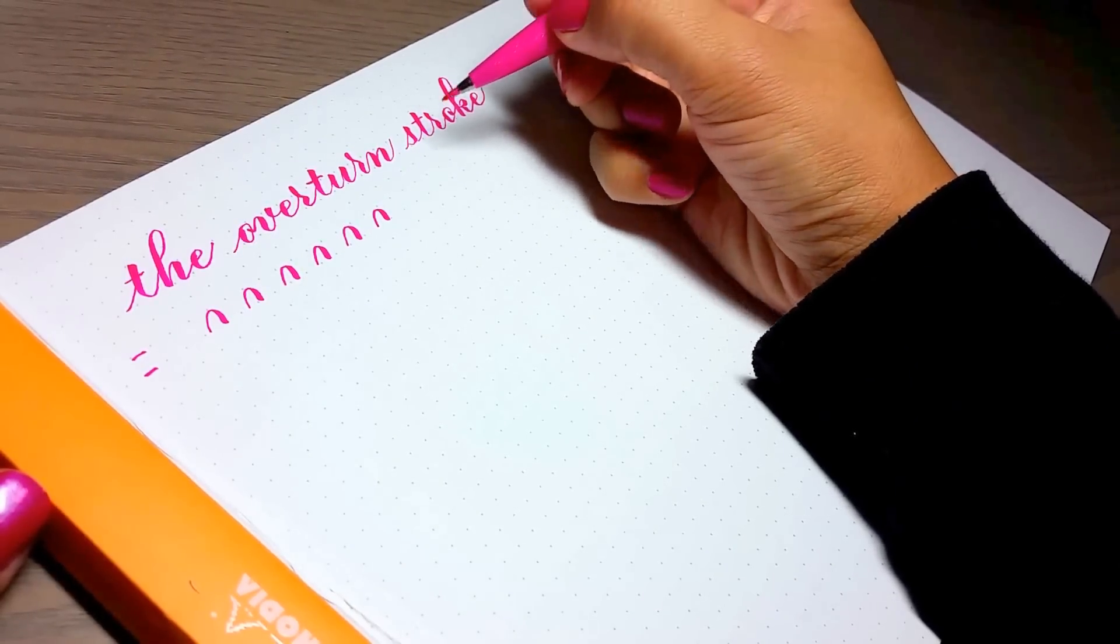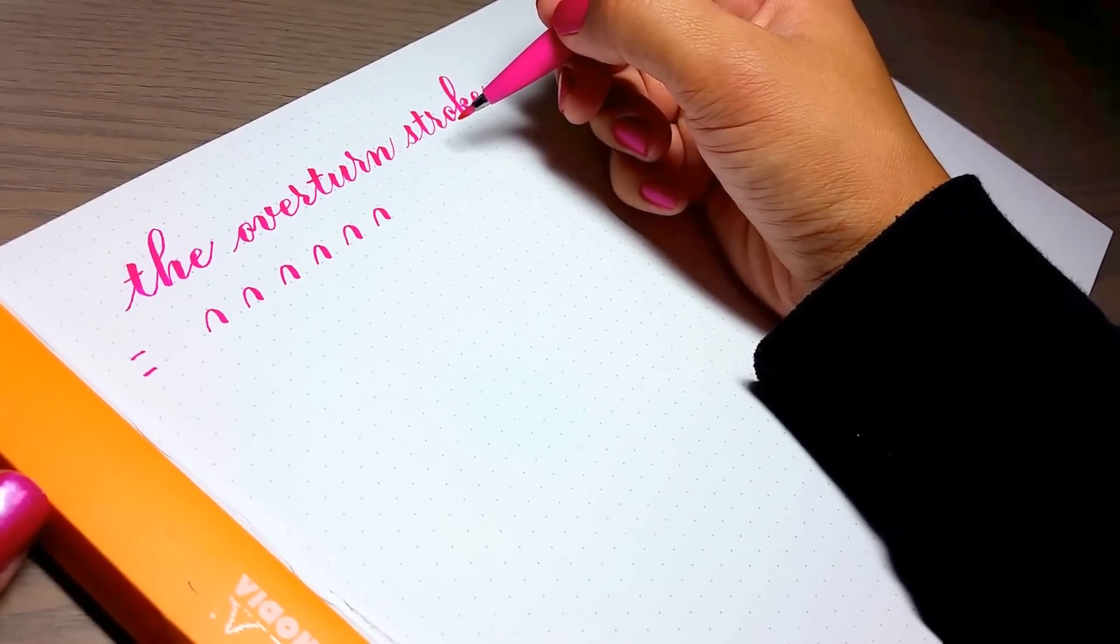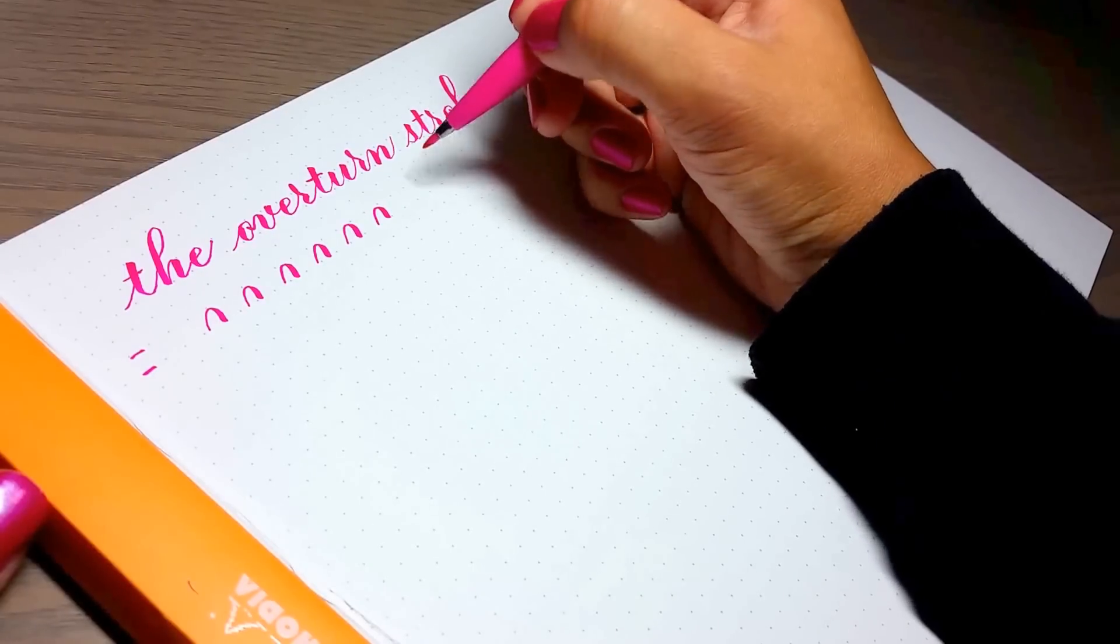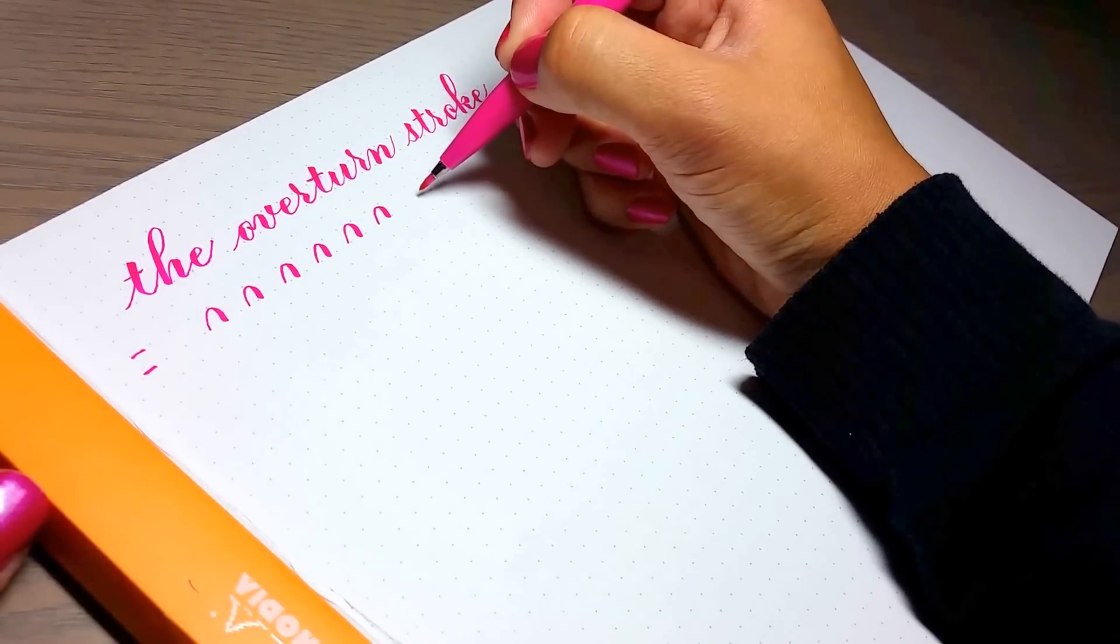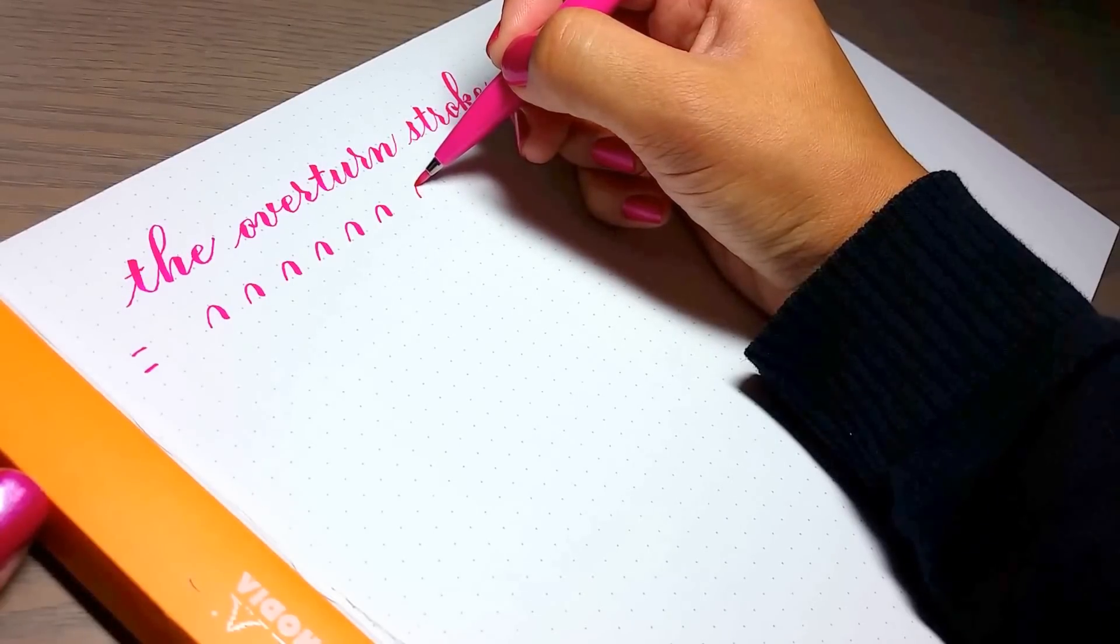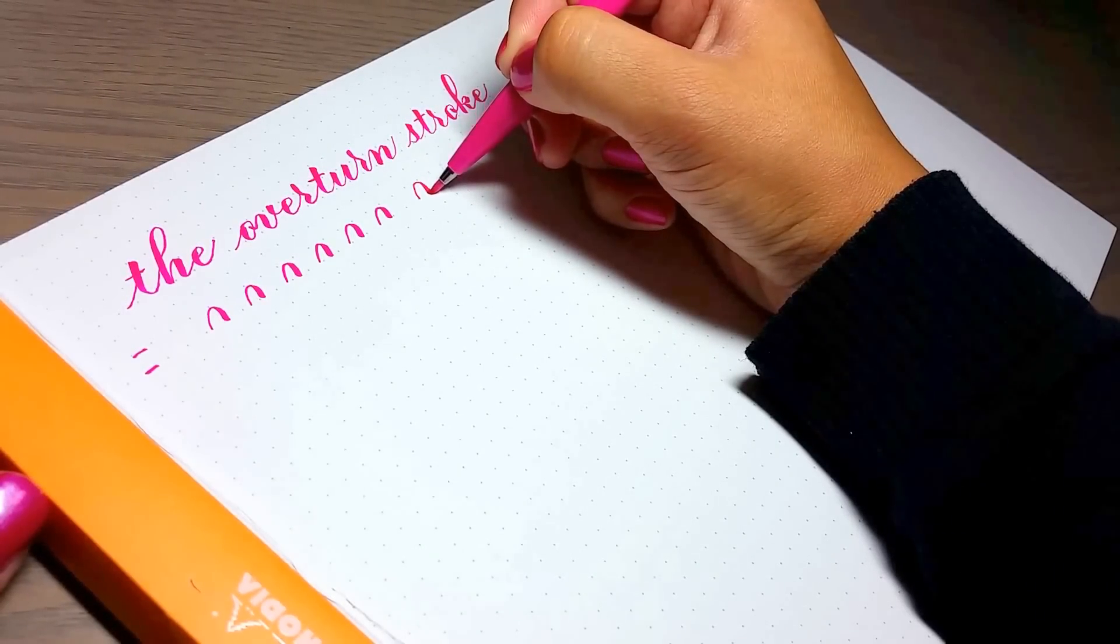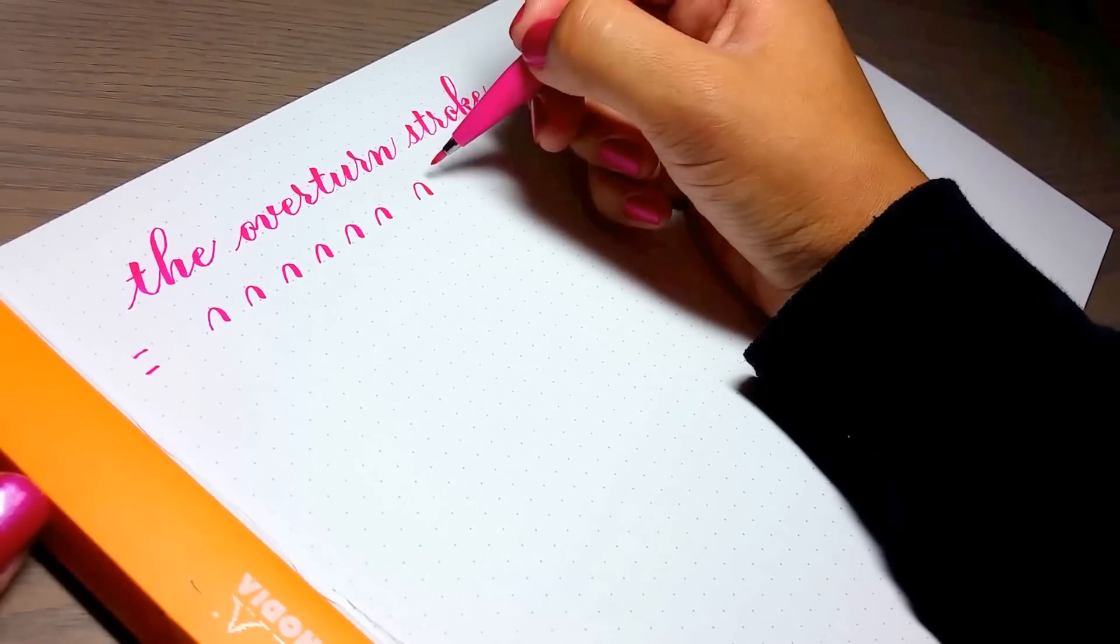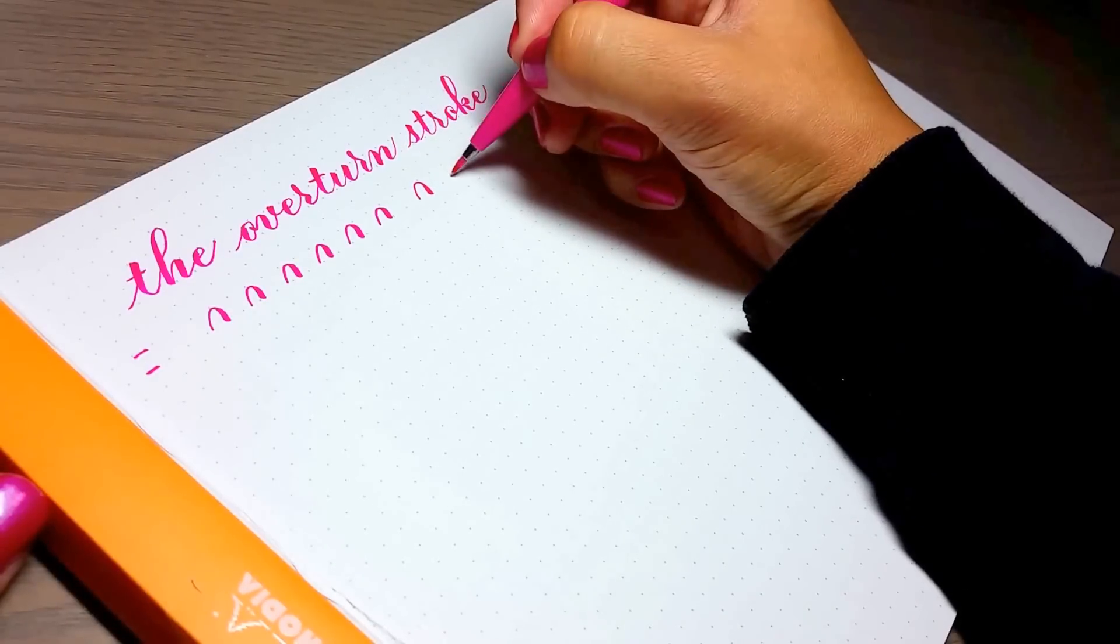So if you've seen in previous videos on pressure and thin and thick strokes you'll remember thin up and thick down. So thin upstroke or light pressure, touch the waistline, and when I curve back around that's when I do the thick downstroke and apply more pressure.